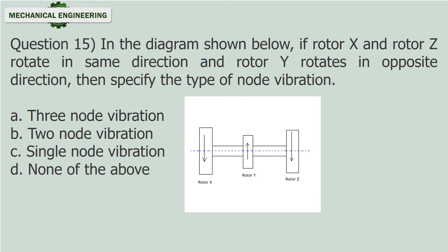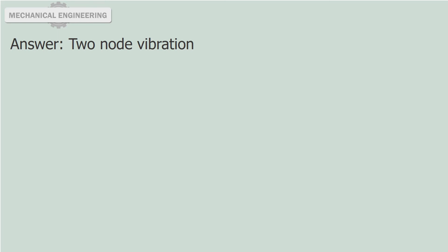Question 15: In the diagram shown below, if rotor X and rotor Z rotate in the same direction and rotor Y rotates in the opposite direction, then specify the type of node vibration. a. 3 node vibration. b. 2 node vibration. c. Single node vibration. d. None of the above. Answer: 2 node vibration.